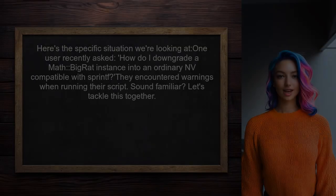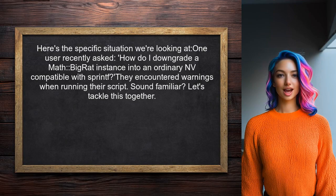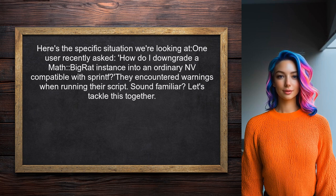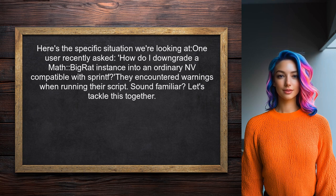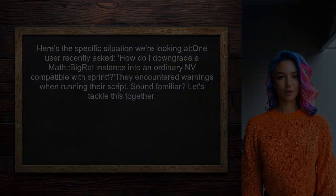Here's the specific situation we're looking at. One user recently asked: how do I downgrade a MathBigRat instance into an ordinary NV that is compatible with SprintF? They encountered warnings when running their script. Let's tackle this together.